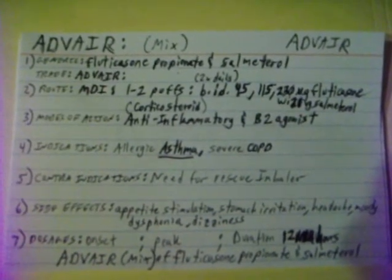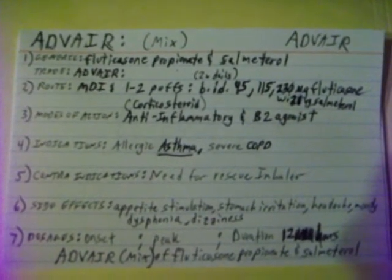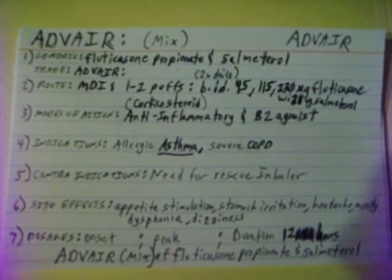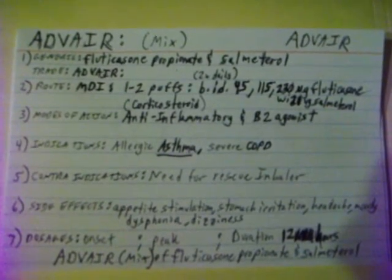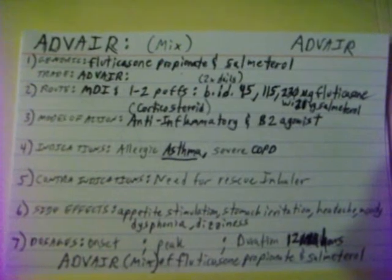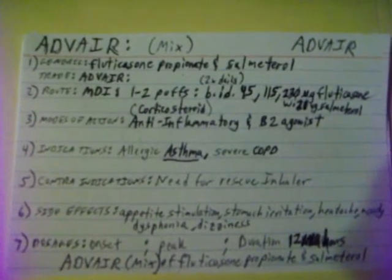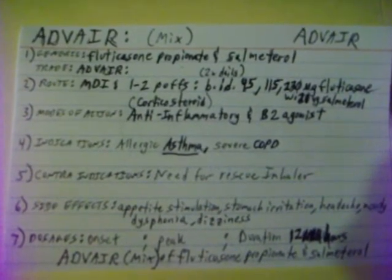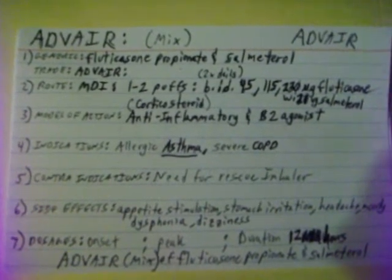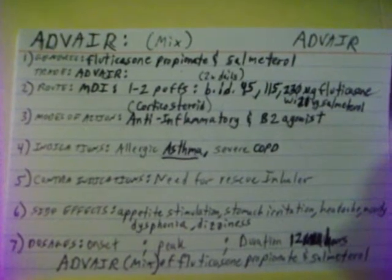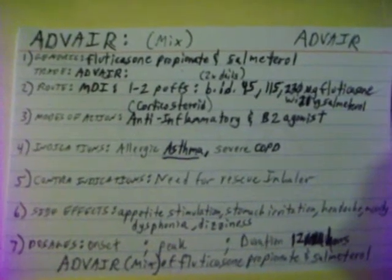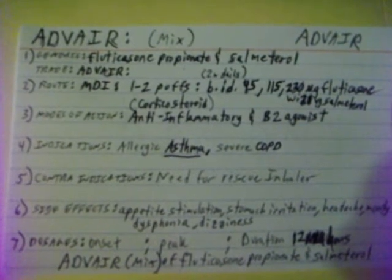Advair is a mix of fluticasone propionate and salmeterol. The trade brand name is Advair. It's given by metered dose inhaler, one to two puffs, BID, which is twice daily. It's given in doses of 45, 115, or 230 micrograms of fluticasone propionate with 21 micrograms of salmeterol.